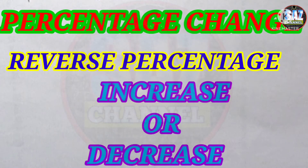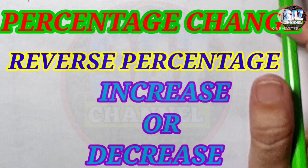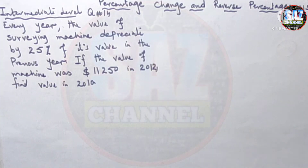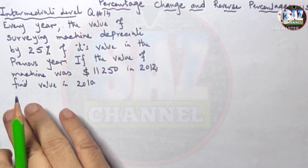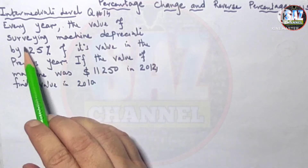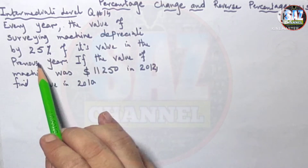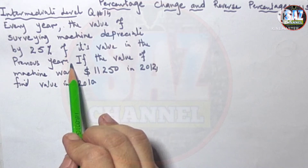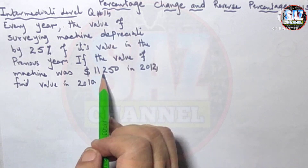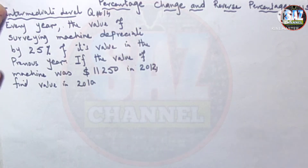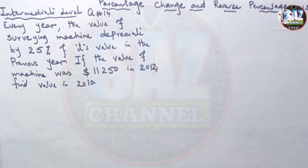Hello and welcome to Maths by Saas. This is my third lesson of B1, Chapter 8, Exercise 8B, about percentage change and reverse percentages. Moving to question 14: every year the value of a surveying machine depreciates by 25% of its value in the previous year. The value of the machine was 11,250 in 2012.